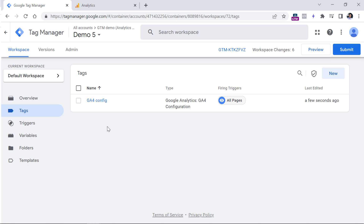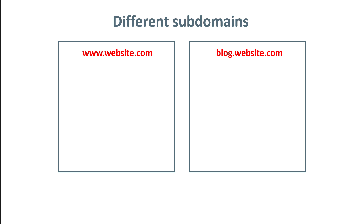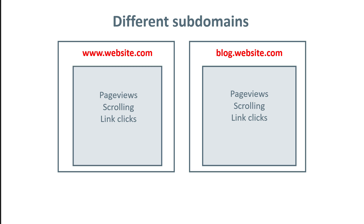This is very convenient, because if in the future I decide to add a new tag to track menu clicks on all websites — English, German, or others — I just need to create one tag and it will cover all the websites. Similarly, if you have two different subdomains, say a main website and a blog, and you plan to track similar things like page views, scrolling, and link clicks, you can use the same container. Technically you can go with separate containers as well, but the management process will become more difficult and time-consuming.